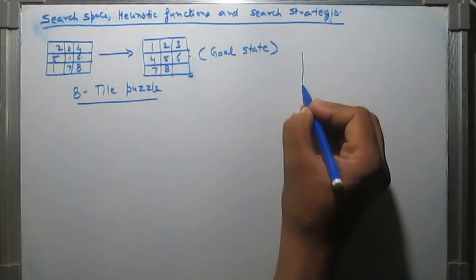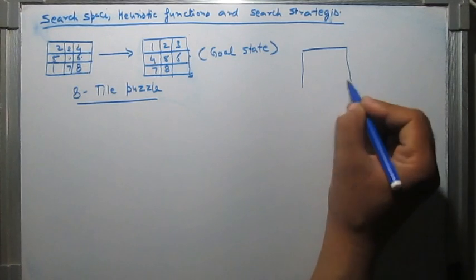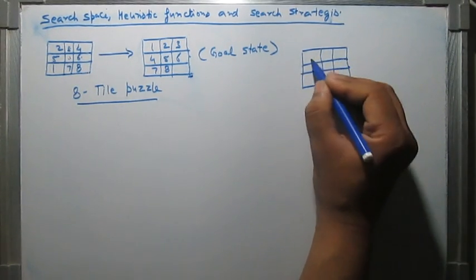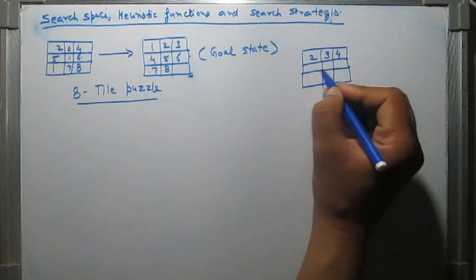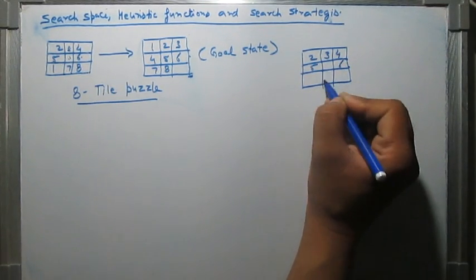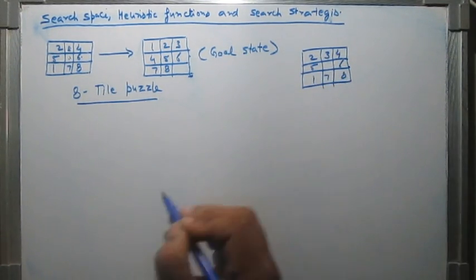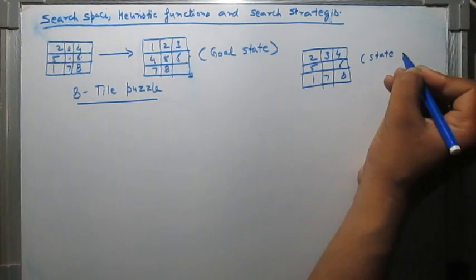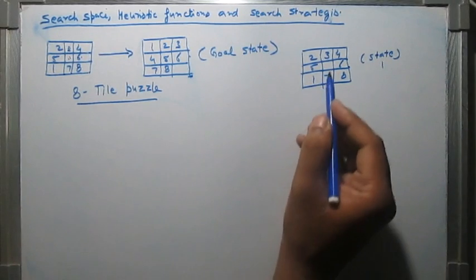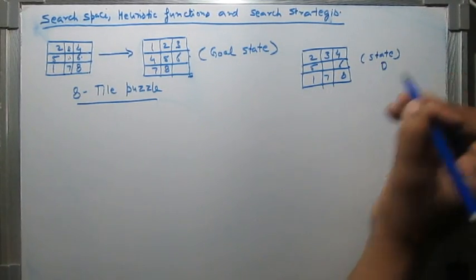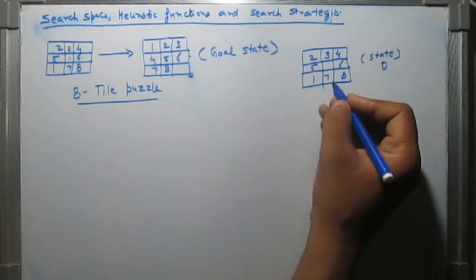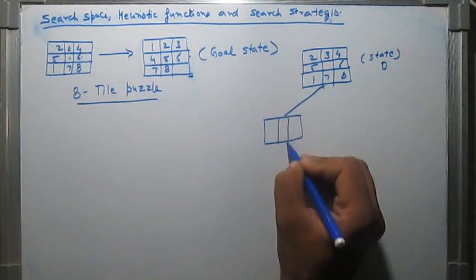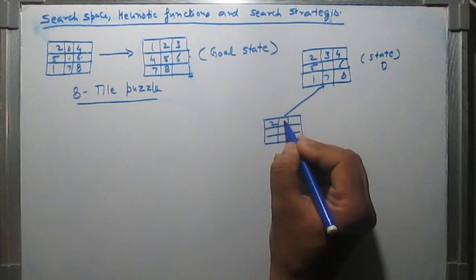Let us try to solve this problem. This is the initial state we are given: 2, 3, 4, 5, 6, 1, 7, 8. From this state, which you can call state 0, from this state we can go to different states.